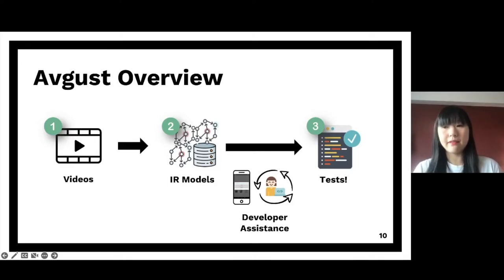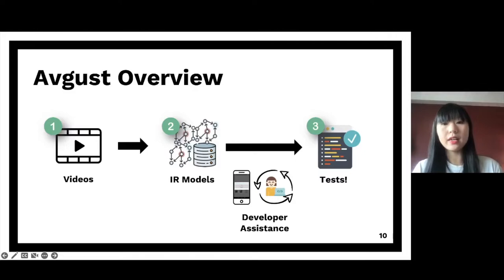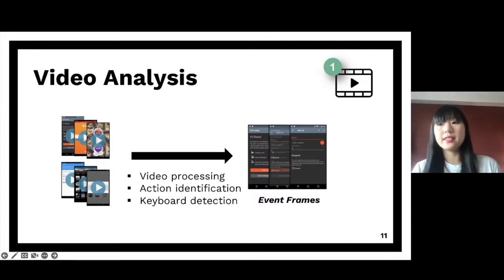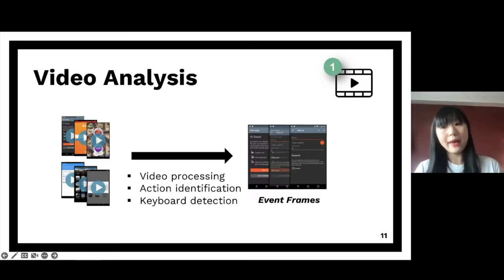For example, say we want to learn sign-in behavior and generate those tests. We feed August with sign-in videos of different apps, and August extracts IR models from them — IR meaning intermediate representation. These IR models capture sign-in behavior in an app-independent way. August analyzes videos and converts them into what we call inventor frames: key video frames that capture user interactions such as clicking a button. This process includes video processing, action identification to figure out what user action is performed — such as click, long tap, or swipe — and keyboard detection to eliminate sensitive frames, such as ones containing the user's password.